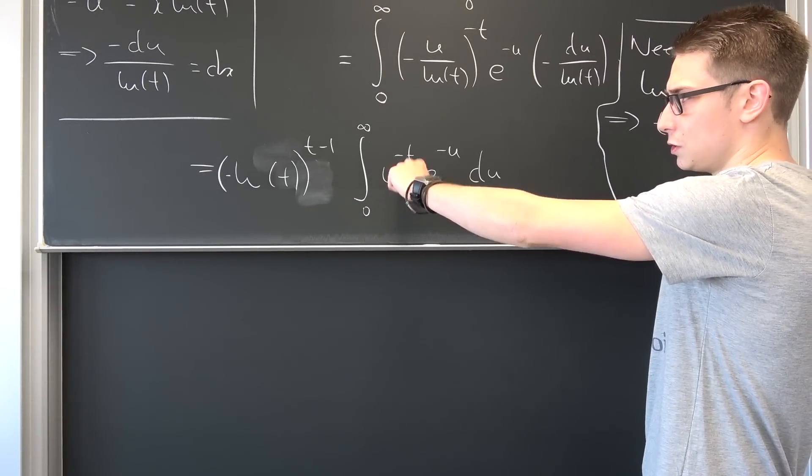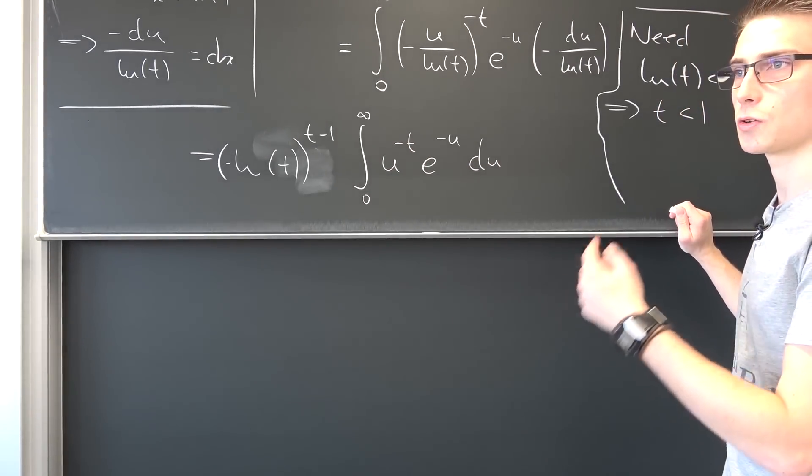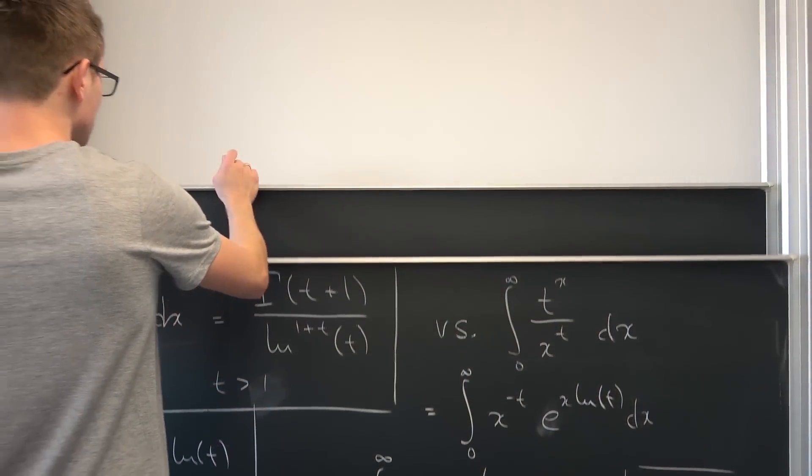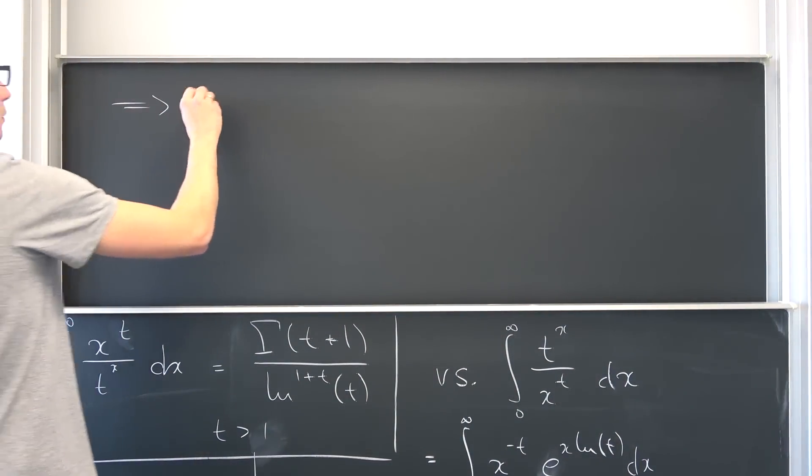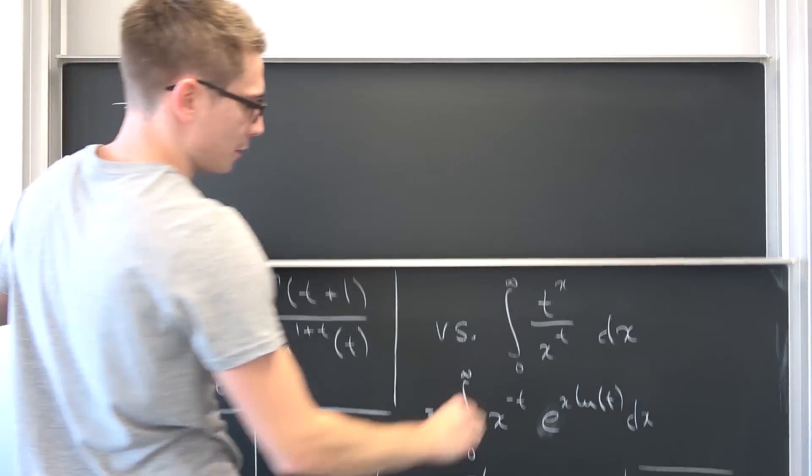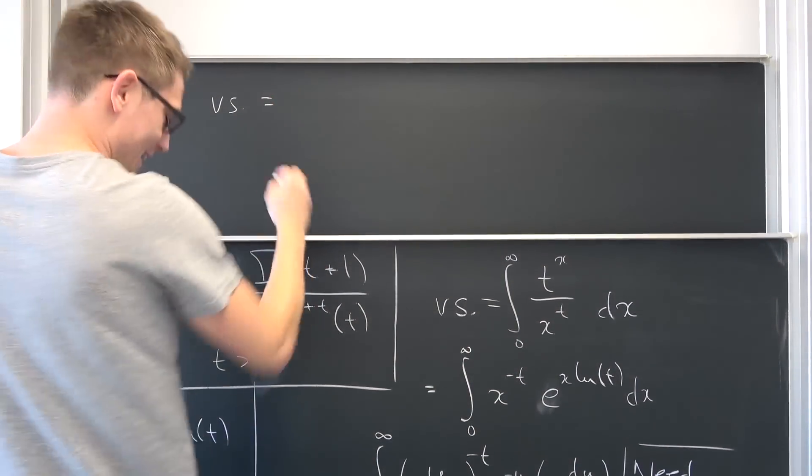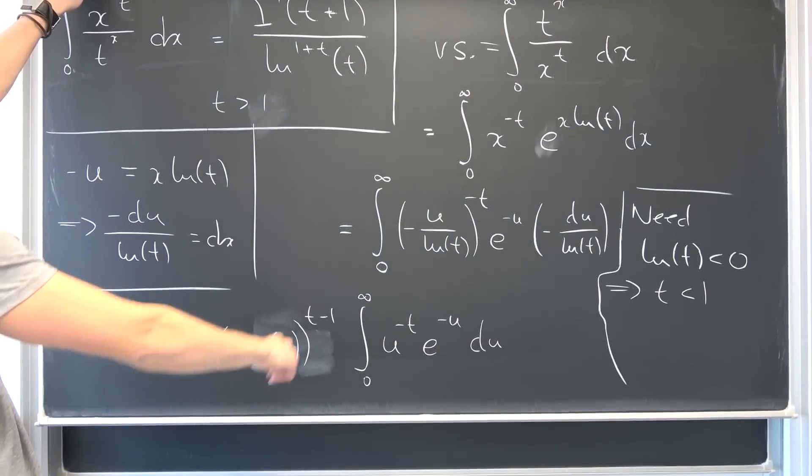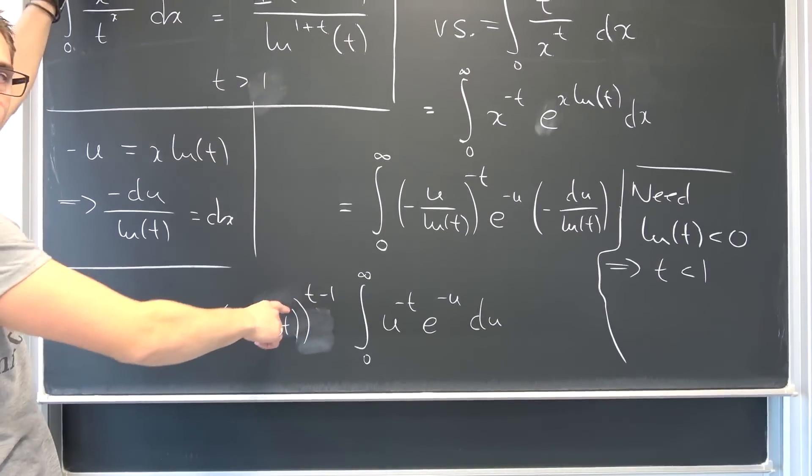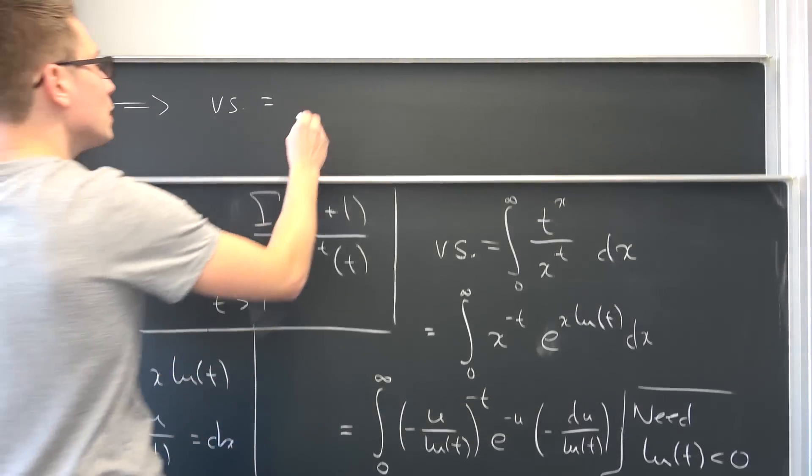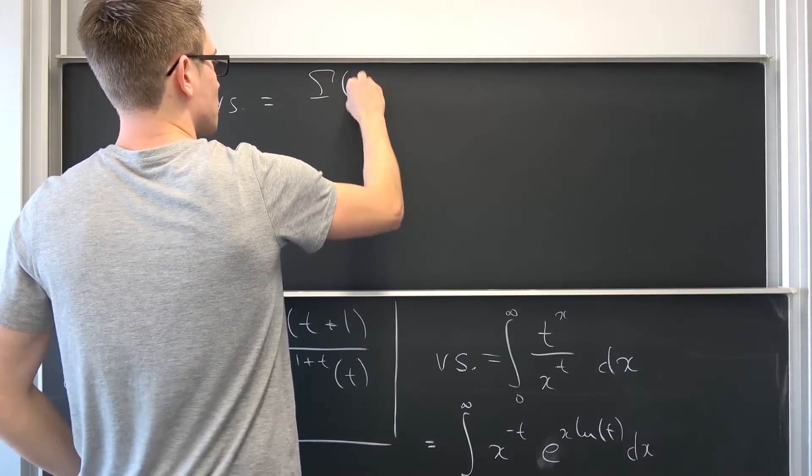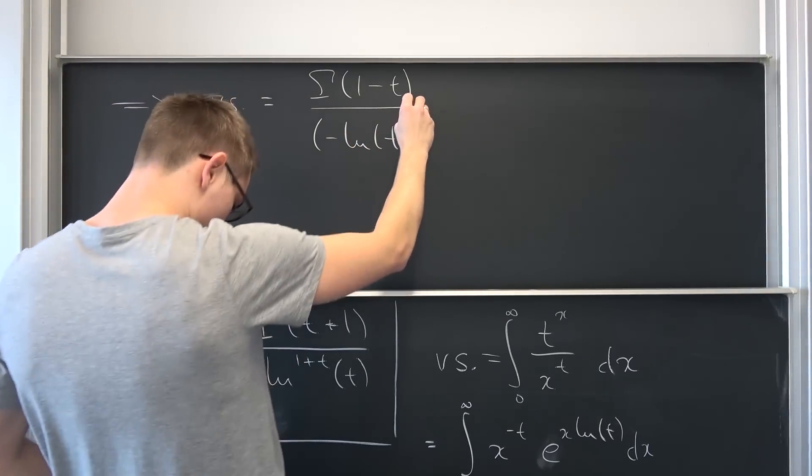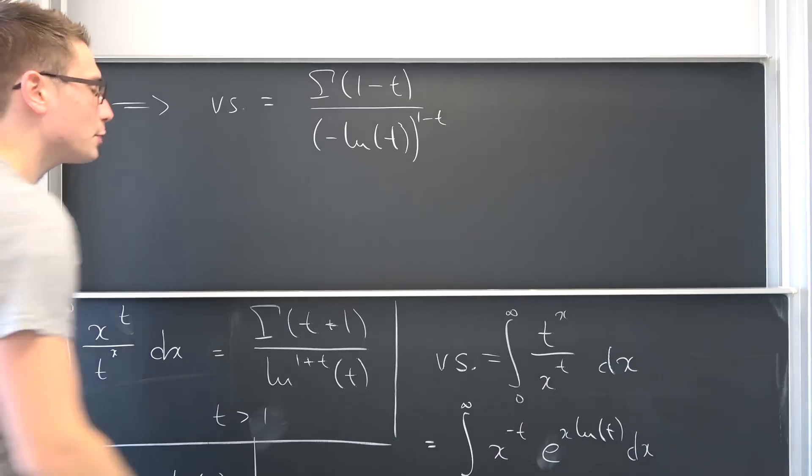This time we have u to the negative t power, so meaning this is going to give us the gamma function of 1 minus t. Meaning overall, our integral versus is equal to this integral, is equal to, if we were to bring this in the same form as here, we are going to take 1 minus t. So 1 over this stuff to the 1 minus t power. So we are going to get gamma function of 1 minus t over negative the natural log of t to the 1 minus t power. And then we are done.